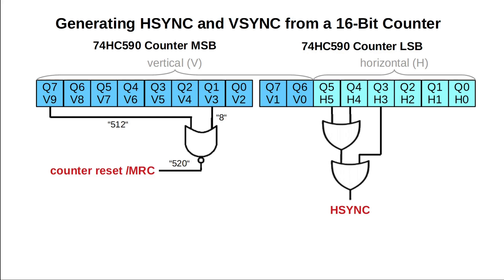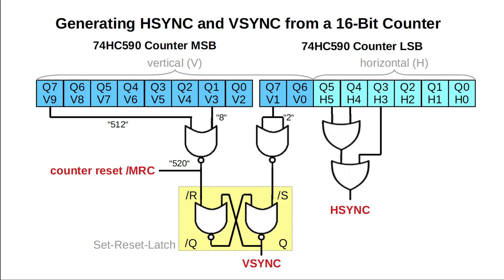The vertical sync pulse is generated from the top 10 bits of our counter, counting the scanlines. First we want to reset the counter when reaching 520. We can use a single NAND gate for this, since it goes low as soon as the 512-bit and the 8-bit go high. To finally generate V-sync, we build a set-reset latch — shown in yellow here — that is switched on when we count up to 2 and switched off again when we reach 520. All in all we only need a 74HC00 quad NAND gate and a 74HC32 quad OR gate for this. Let's go!